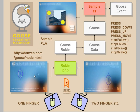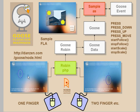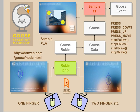Goose has two parts to it: one is the emulator and the other is the processor. There's an online emulator available at danzen.com/goose/node.html. You go to that URL on one computer and that gives you a mouse. Then you go to another computer, go to that URL, and you've got a second mouse — you can go to more computers as well. Each of these cursors will eventually show up in your application so that you can drag around things with multiple cursors and scale them, just as if they're fingers.